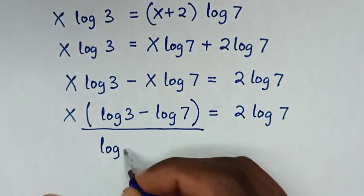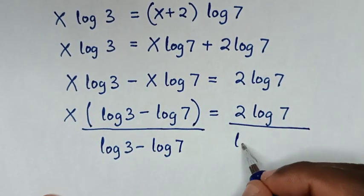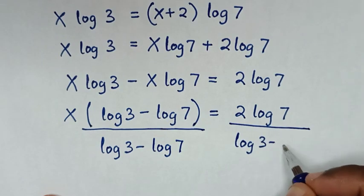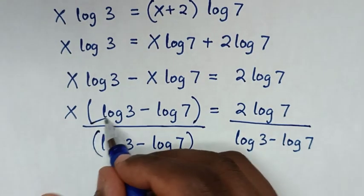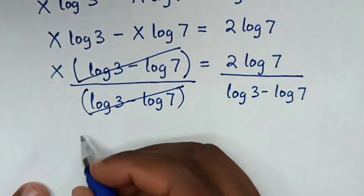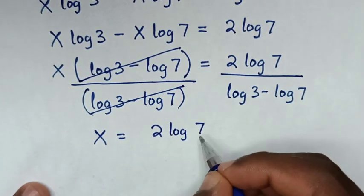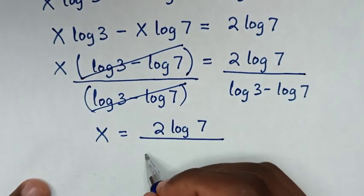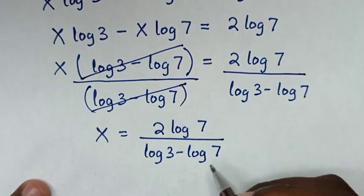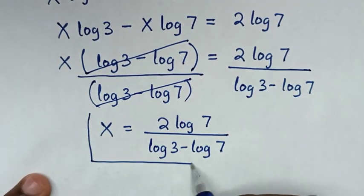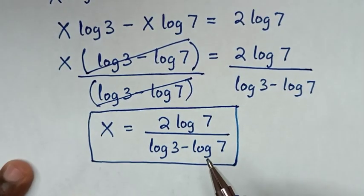Then we divide by (log 3 minus log 7) on both sides, so this and this will cancel. It will be x is equal to 2 log of 7 over log of 3 minus log of 7. Therefore this is our final answer, the same as the answer in the first method.